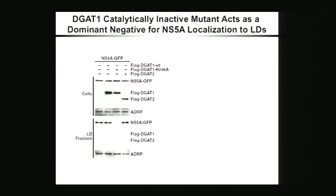Moreover, we identified in the lab a catalytically inactive DGAT1 mutant at position 246, and we find that NS5A can still interact with this mutant. But interestingly, when we overexpress this mutant, NS5A could not access the lipid droplet fraction anymore, compared to when we overexpressed wild-type DGAT1 or wild-type DGAT2. So this mutant acts as a dominant negative for NS5A translocation to lipid droplets.